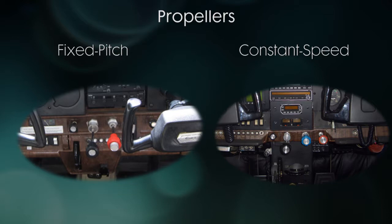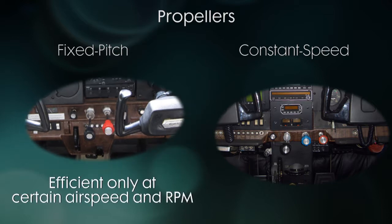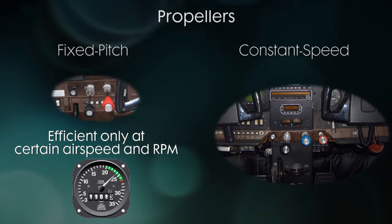A fixed pitch propeller is efficient only at a certain airspeed and RPM. Those propellers can be designed to be either good for climb or cruise, and most are a mixture of both. The tachometer will show the engine power in RPM. Now when you first start flying, you'll be flying an airplane with a fixed pitch propeller, so you only have a throttle and a mixture control and no propeller control.